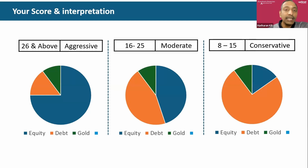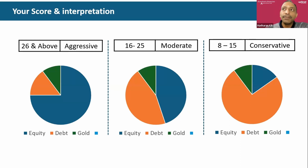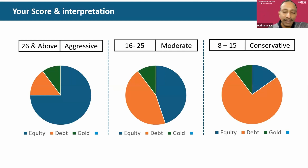Irrespective of whether you are aggressive, moderate, or conservative, the key learning is that we need to have all asset classes in our portfolio. Based on your risk profile, you know your maximum allocation to a particular asset class. When I say 75%, you can have a buffer of 5–10% — that's okay.